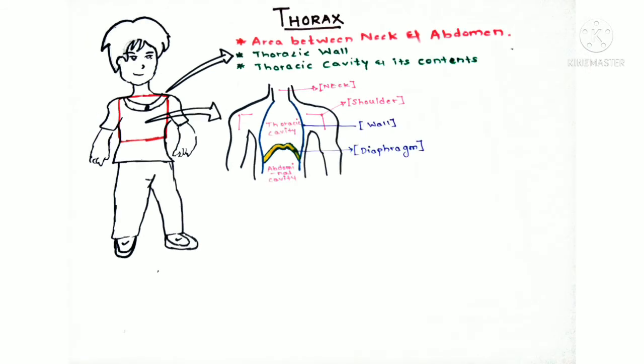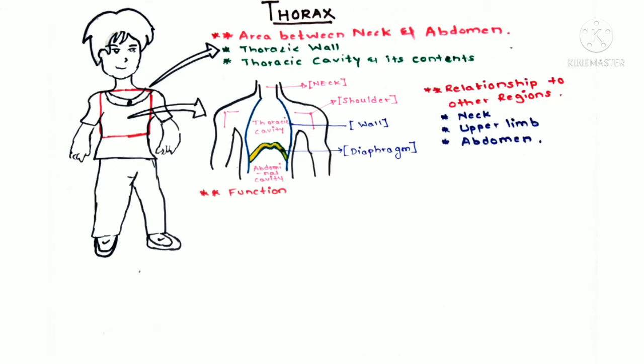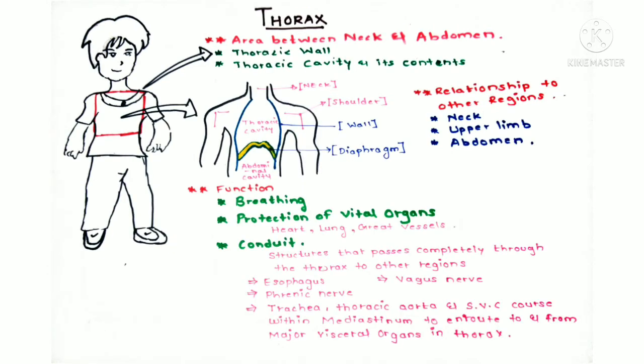Clearly you can say the thorax has a relationship to other regions like the neck, upper limb, and abdomen. Now coming towards the functions of the thoracic region: first, it helps us in breathing. Second, it protects vital organs such as the heart, lungs, and great vessels.